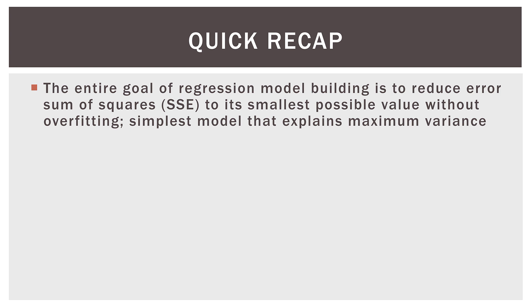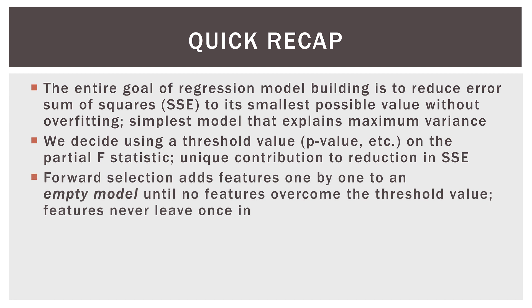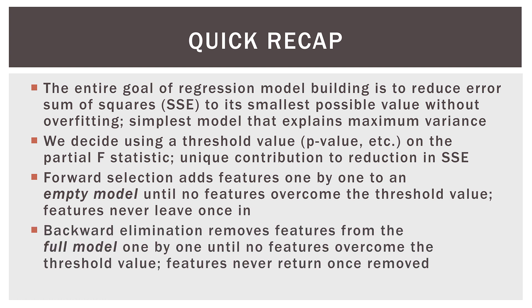Remember the entire goal of regression model building is to reduce the error sum of squares. We want to take the SSE and reduce it to the smallest possible value without overfitting the model. We want the simplest model that explains the maximum variance in our dependent variable. We decide using a threshold value — and in these cases we've been using the P value, but there are others — on the partial F statistic. That represents the unique contribution of the reduction in SSE of that feature variable. Forward selection adds features one by one to an empty model until no features overcome our threshold value, and once the features are in, they never leave. Backward elimination is the opposite: we start with a full model and pull variables out one by one if they don't overcome the threshold value, and once a feature leaves, it never returns.